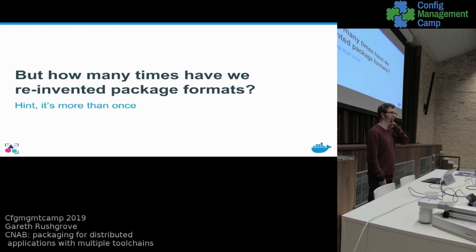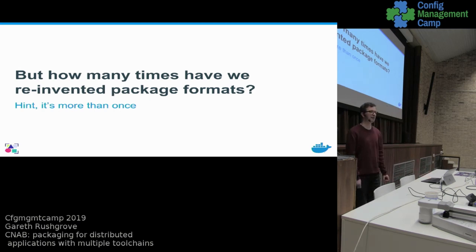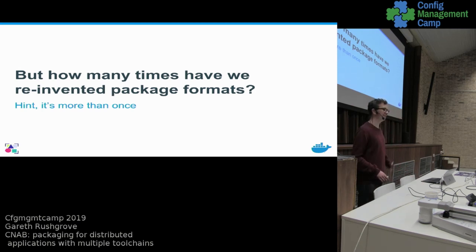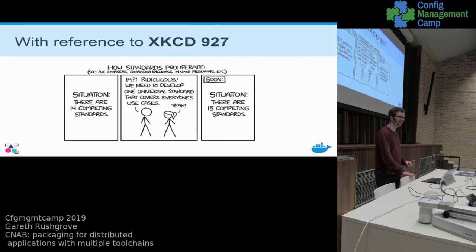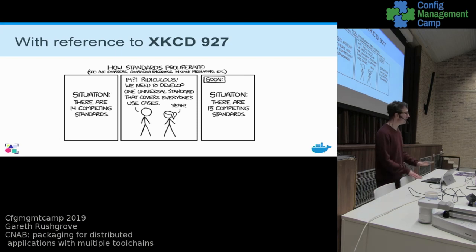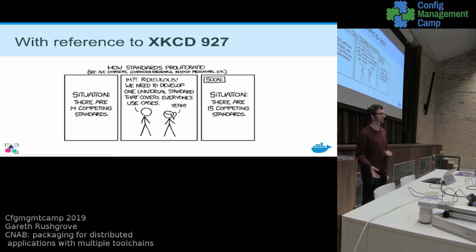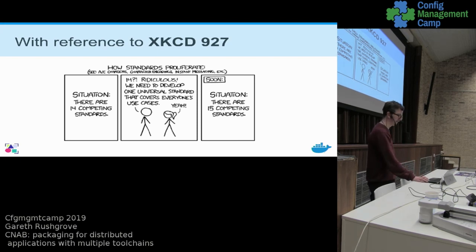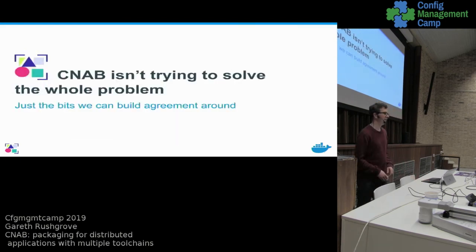One of the things that definitely comes up in any conversation where it's like "hey, I've got a new thing" — and it's true of tools, definitely true of formats and specifications — is: haven't we been here before? And the answer is hopefully not completely. When it comes to package management formats, have we invented packaging management formats before? Yes, definitely more than once. There's the obligatory reference to "there are 14 competing standards, I know, I've got a new one and now there are 15." I don't think that's quite true in the context of CNAB.